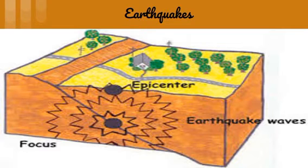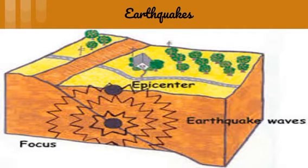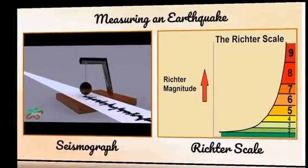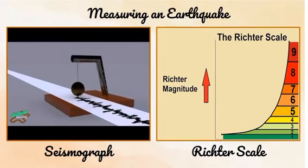After big quakes, sometimes smaller quakes or tremors may continue to occur, which are often called aftershocks. The strength of an earthquake can be measured using an instrument called the seismograph, which measures the intensity, direction and duration of earthquakes.